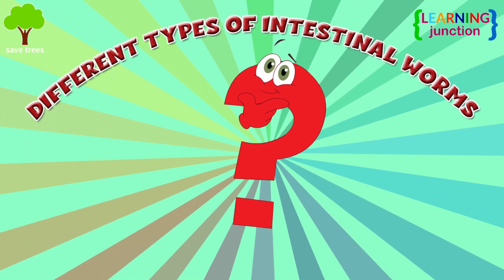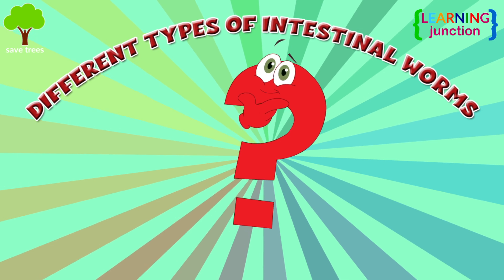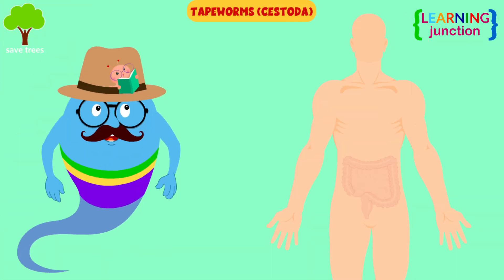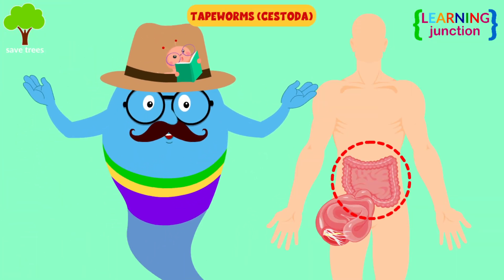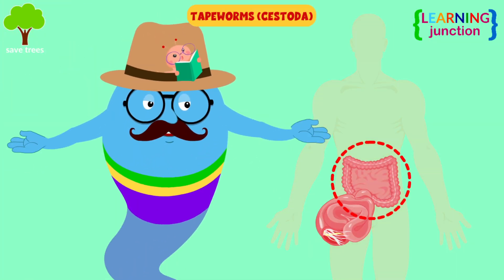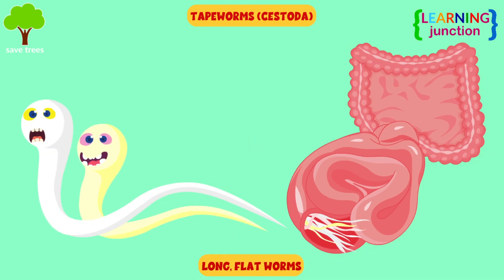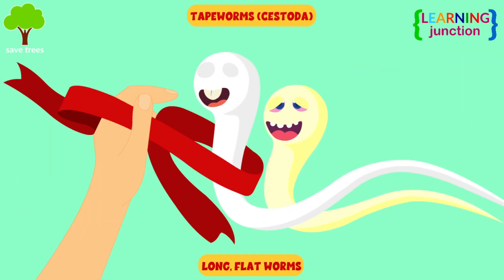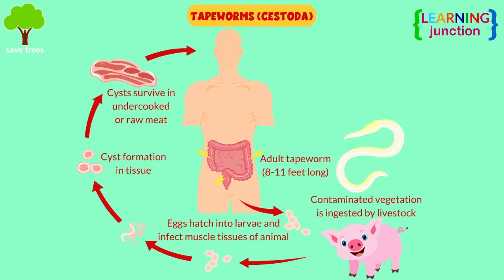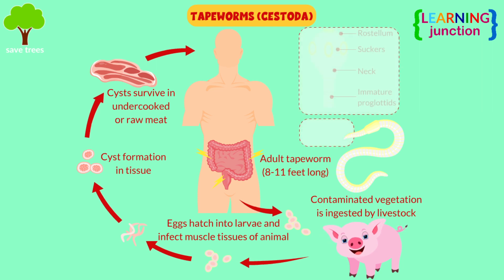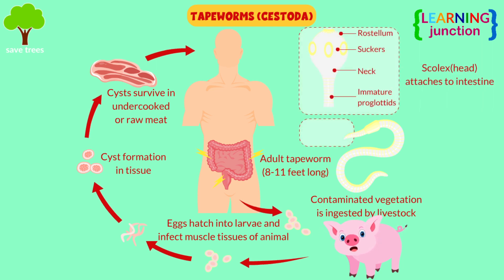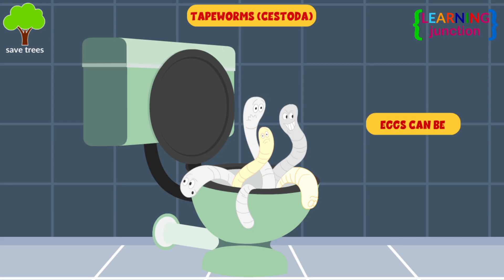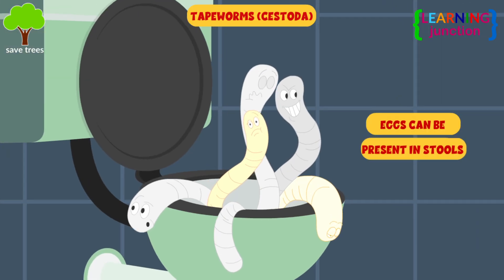What are the different types of intestinal worms? Tapeworms. They live in the digestive tract, and these long, flat worms look like a piece of tape or ribbon. Their eggs typically enter a human host from animals through food, particularly raw or undercooked meat. Tapeworm eggs can be present in stools.